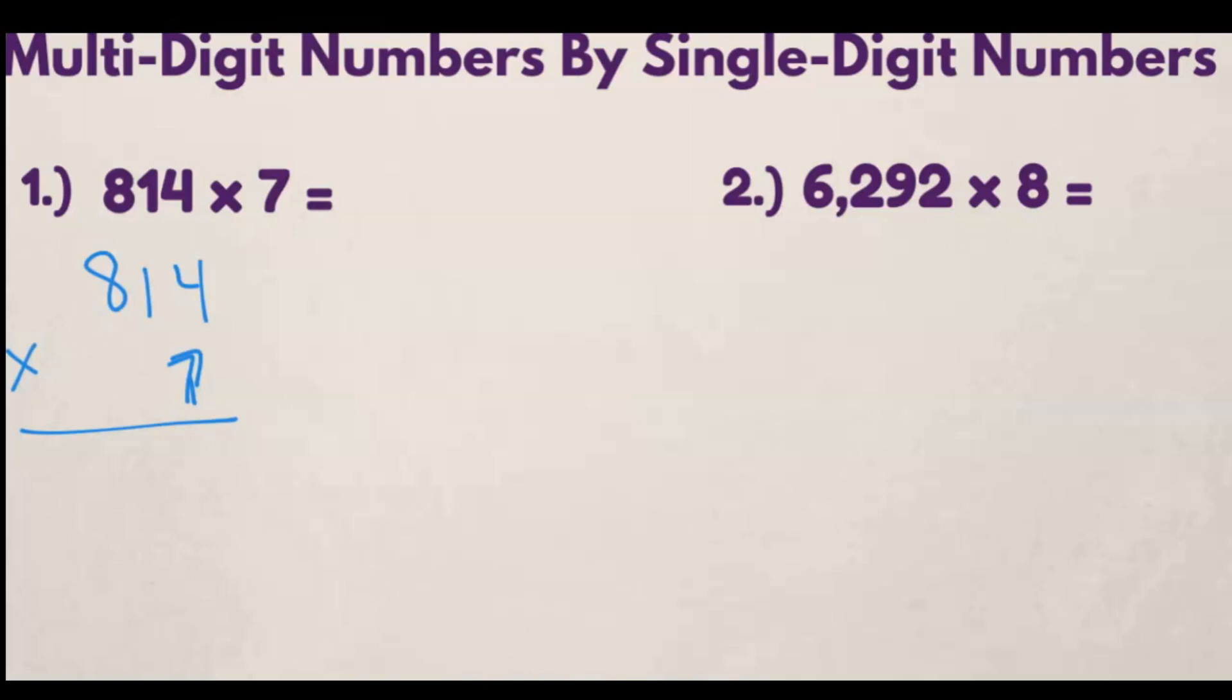So first step is 4 times 7, which is 28. Well, you can't put 28 down here. So what you're going to do is you're going to put down the 8 because that is the ones digit and you're going to carry over the 2, which is actually 20 or two tens.